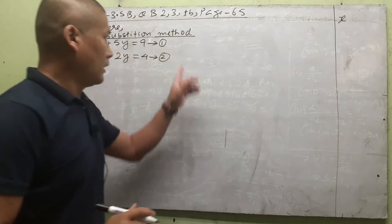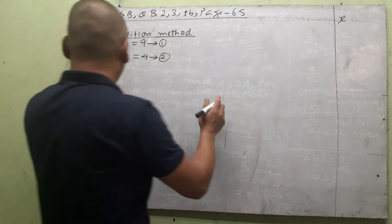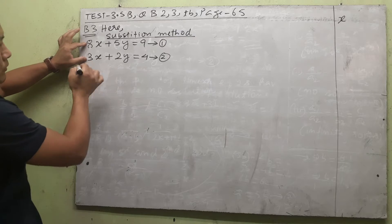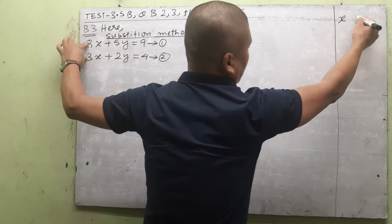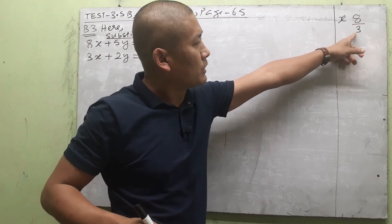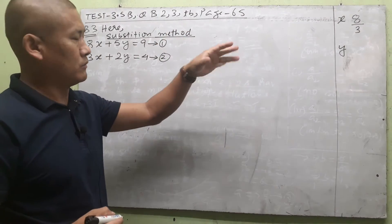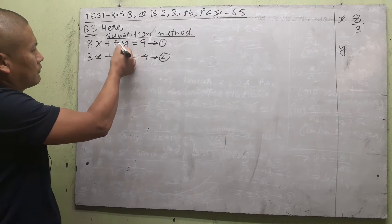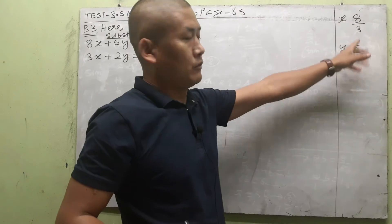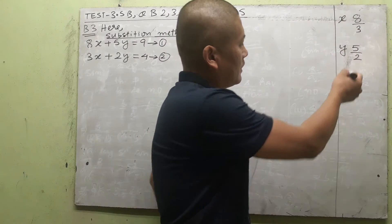Let us look at the coefficients of x in both equations: in equation 1 the coefficient of x is 8, and in equation 2 it is 3. For y, the coefficients are 5 and 2 respectively. We place the bigger coefficient on top and the smaller one below. We check if we can cancel: 8 and 3 can't cancel, and 5 and 2 can't cancel either. The smallest number among all these coefficients is 2.